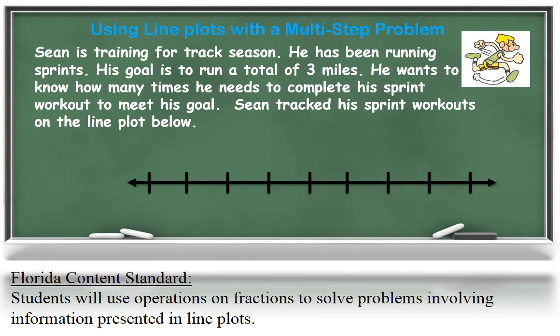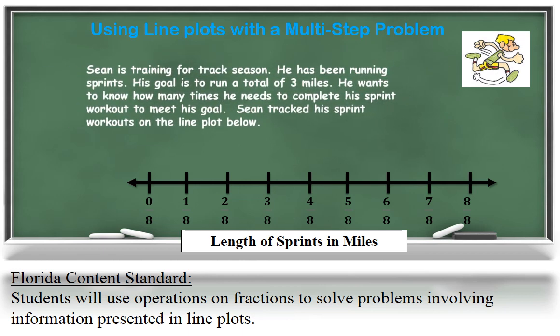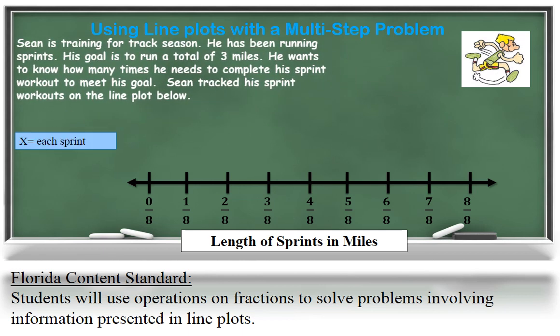In this problem, Sean's line plot has already been created for us. He is using an increment of eighths of a mile. And each of the X's will represent an individual sprint that he does. I can easily see that he does two 1/8th mile sprints and two 2/8ths mile sprints in each workout by counting the X's atop each of the values 1/8th and 2/8ths.